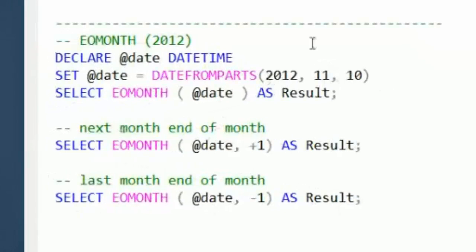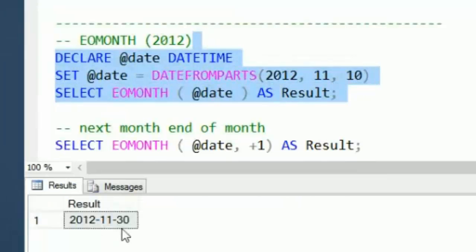So I'm just going to declare this datetime, put in 2012-11-10, so November 10th, and I'm going to ask for the end of month for November, which gives us November 30th.